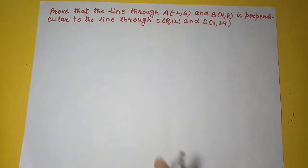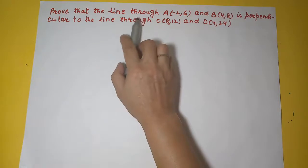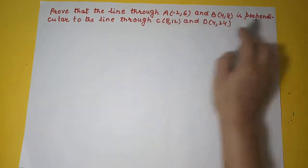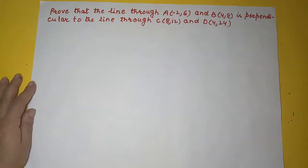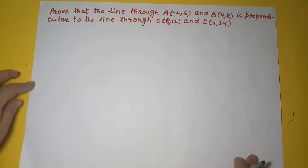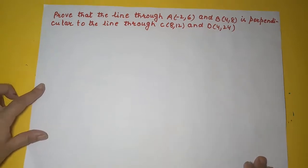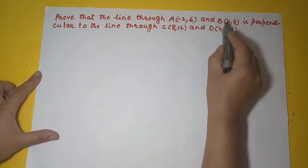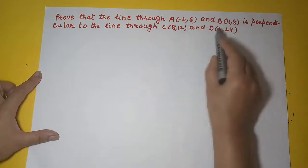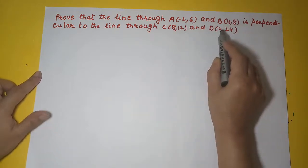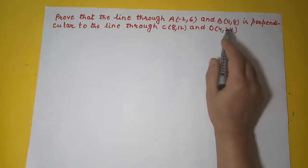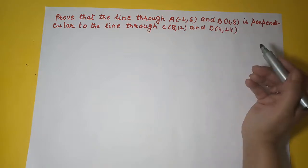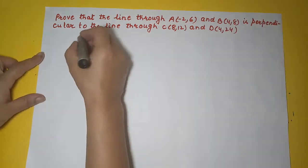In the next question, we have to prove that the line through this is perpendicular to the line through this. Now we know that the two lines are perpendicular when the product of their slopes is minus 1. So does that mean we have to find the slope of this line, then the slope of this line and multiply them? If the product is minus 1, they are perpendicular. So let's do that.